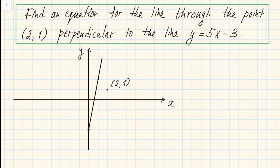In this video we will discuss the following problem: find an equation for the line through the point (2, 1) which is also perpendicular to the line y equals 5x minus 3.